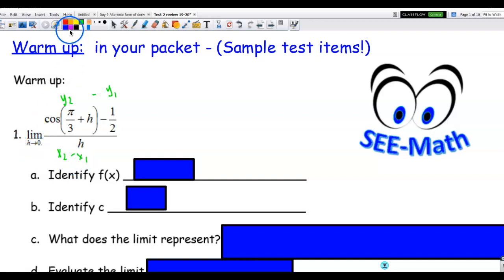h is approaching 0, so this appears to be a derivative. And here with my math eyes I am seeing a c value. So c equal to pi over 3, and back here I am seeing what I believe to be f of c. So what I believe I have here is a point specific derivative of f of x, which in this case is cosine of x at x equal to pi over 3.